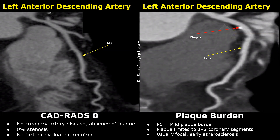In P1, plaques can be present in one or two segments. For the left anterior descending artery, there are three segments: proximal, middle, and distal. The plaque burden takes into account the presence of plaques in all the coronary arteries.